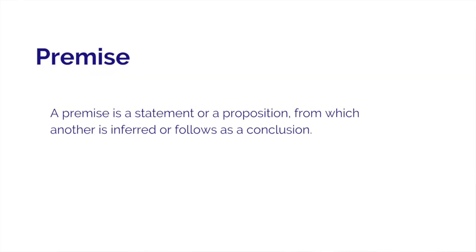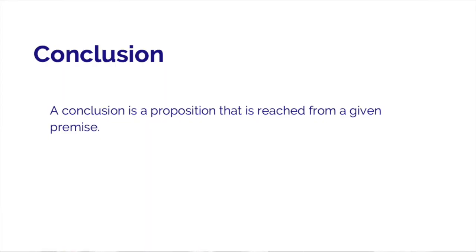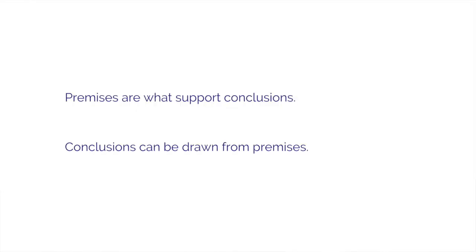The first part of the verbal reasoning questions we'll see is arguments. Arguments are propositions put forward with evidence and reasons to support them. Before we proceed there are a couple of key terms to be familiar with. A premise is a statement or proposition from which another proposition is inferred or a conclusion is made. A conclusion is a proposition that is reached from a given premise. Essentially, premises are what lead to and support conclusions, and conclusions are drawn from premises.